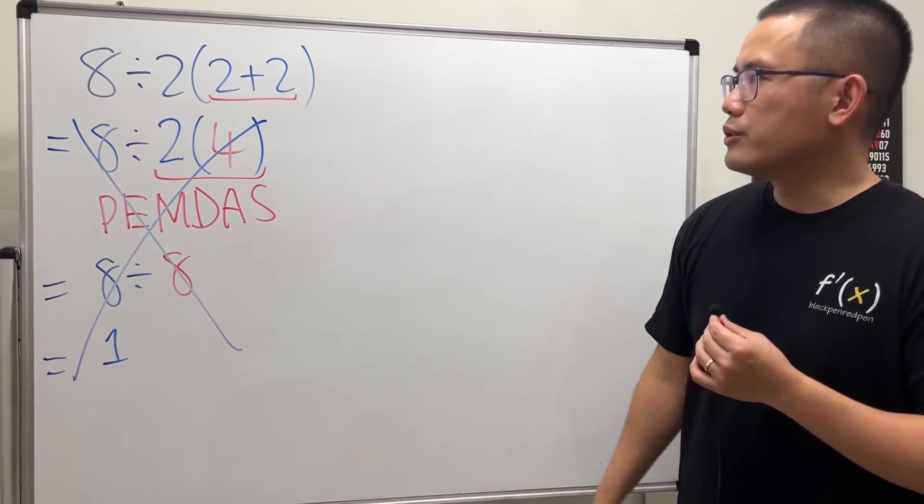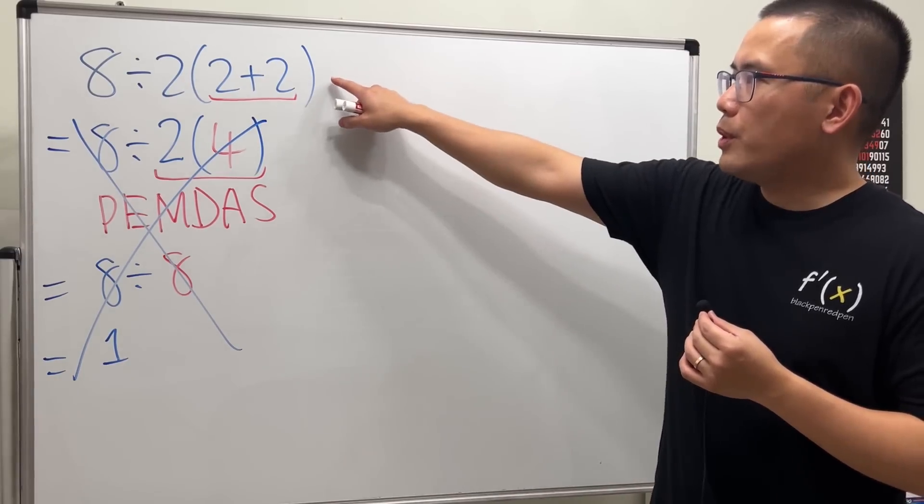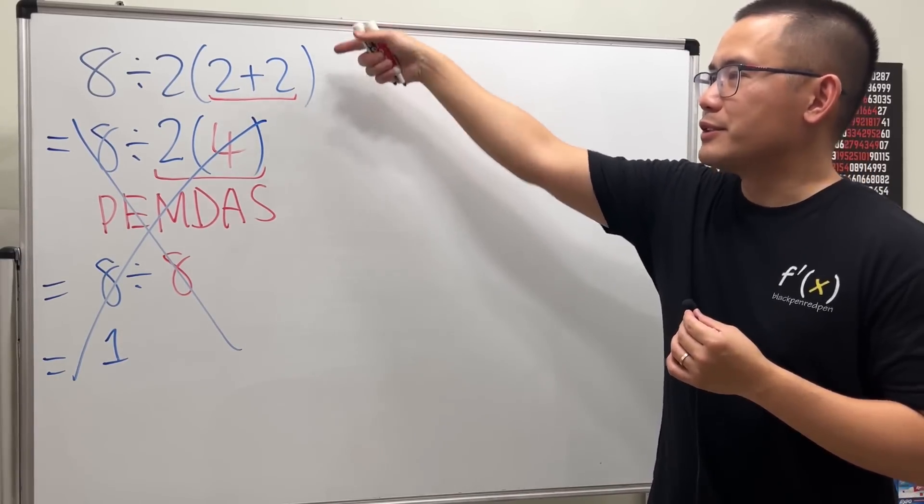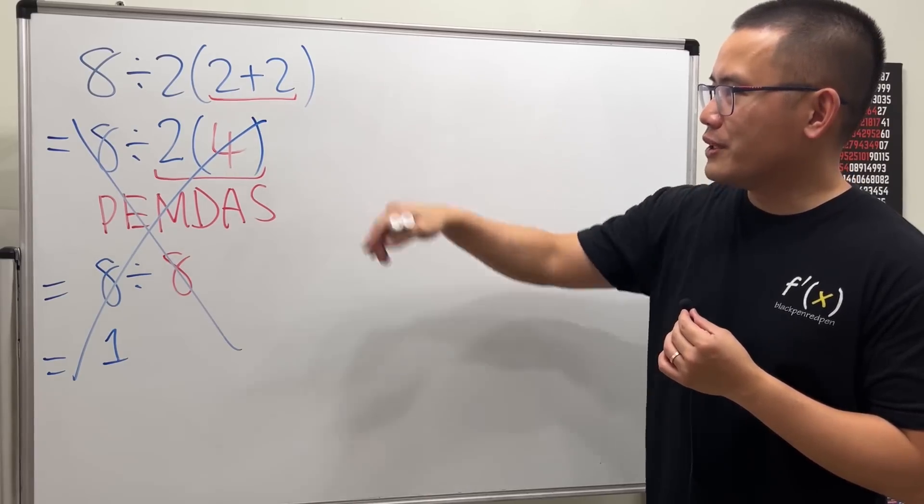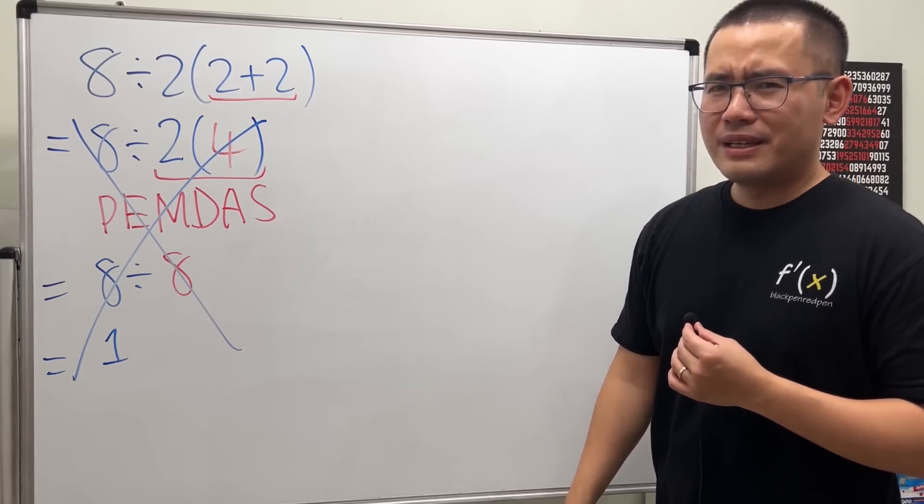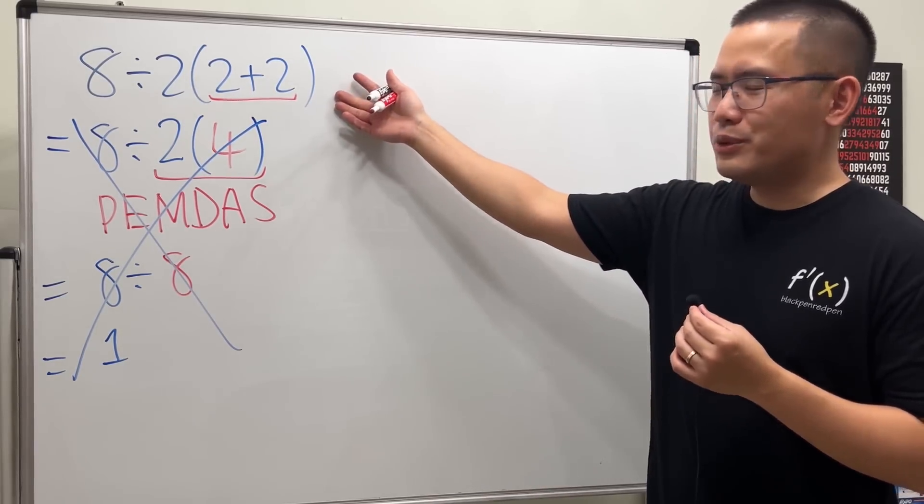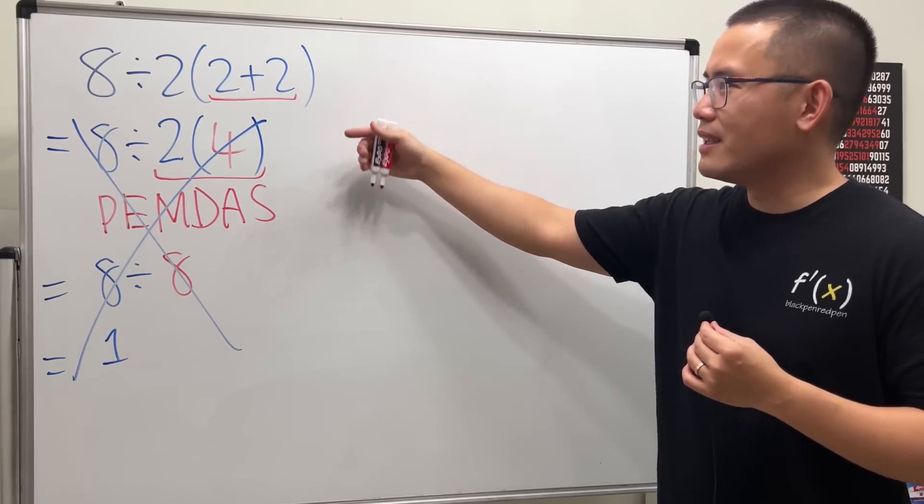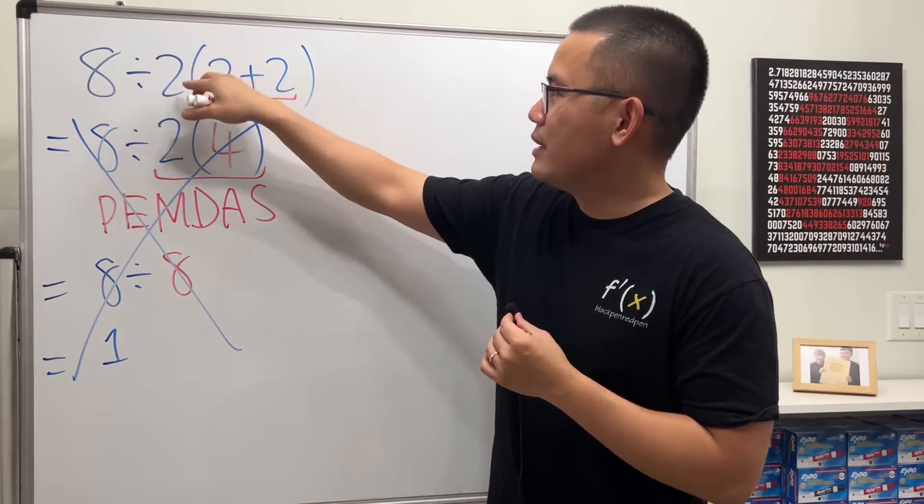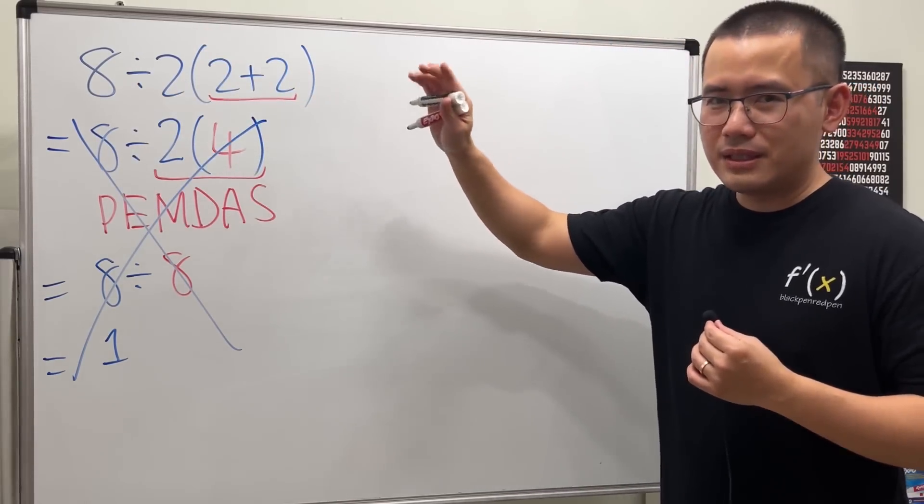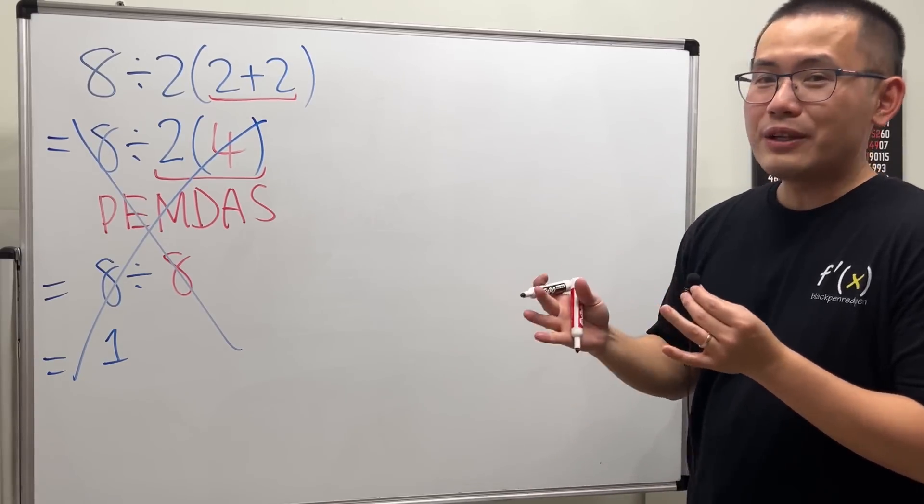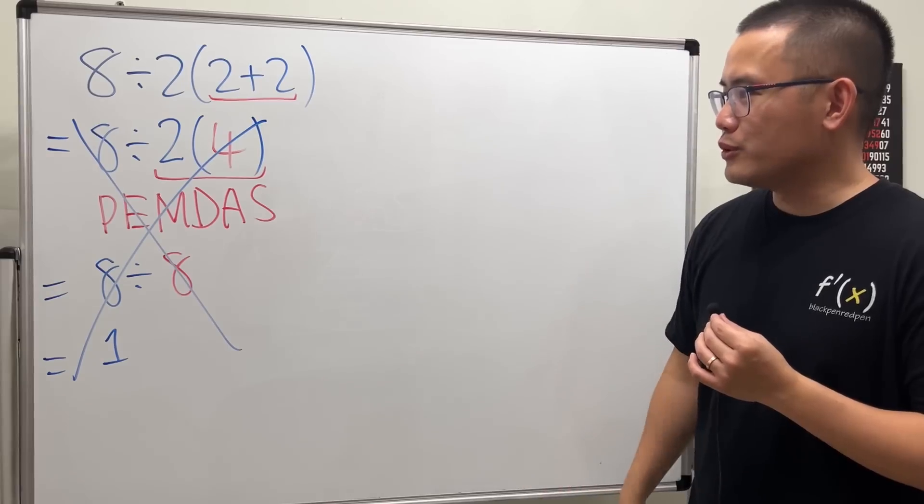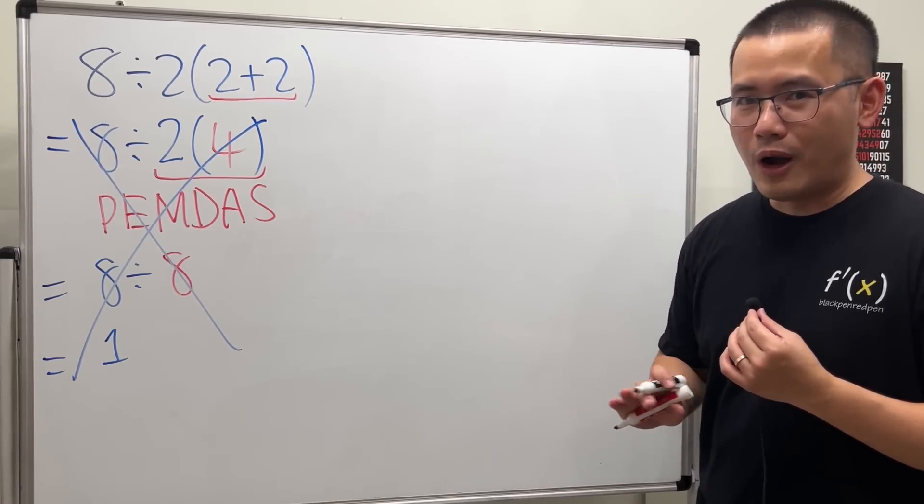And by the way, I should also mention this—some people will say they hate this question because of how the expression is written in the first place. I will tell you there's nothing to hate about this. This is totally fine. We have division and also the parentheses. There's only one answer for this, okay? We just have to follow the order of operations correctly and there's no argument at all.